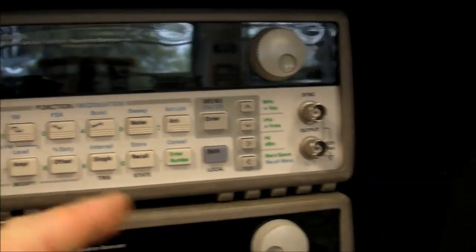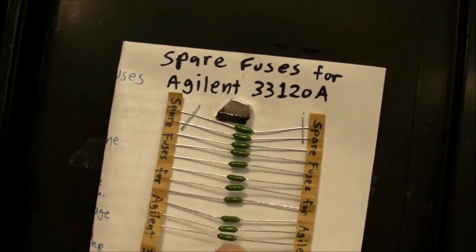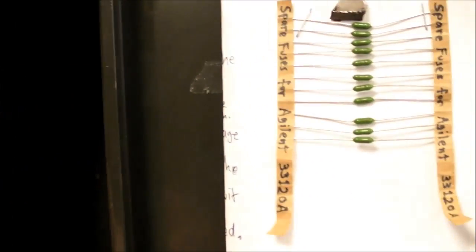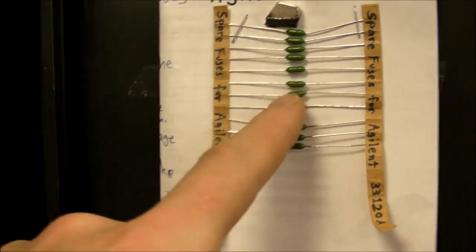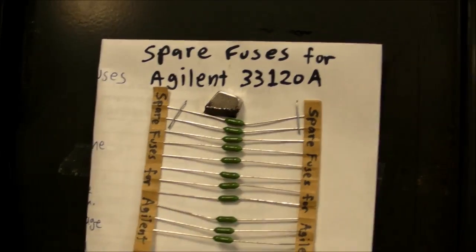Another thing I keep in here is spare fuses for these Agilent 33-120s because probably once or twice a semester I have to replace one of the fuses on the 50-ohm output. Somehow that gets blown. I guess students mistakenly hook up their 15-volt power supply to it or something like that. Somehow the fuse gets blown once or twice a semester and so I got to pop it open and solder on a new fuse onto the circuit board.